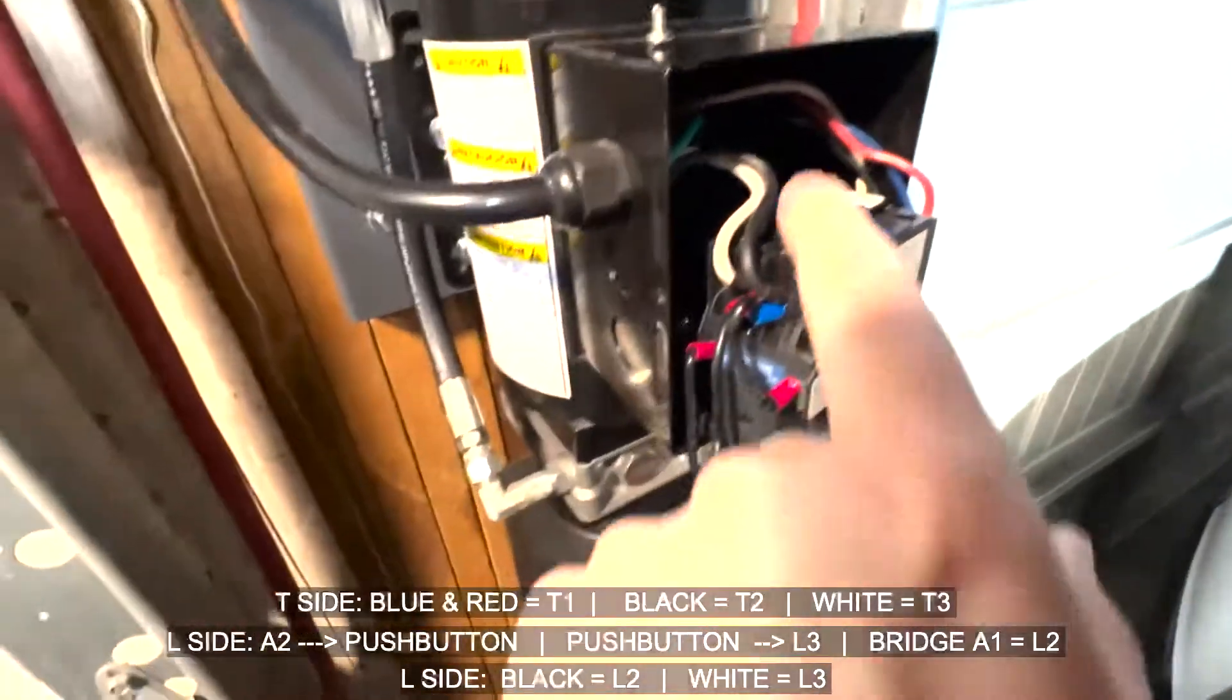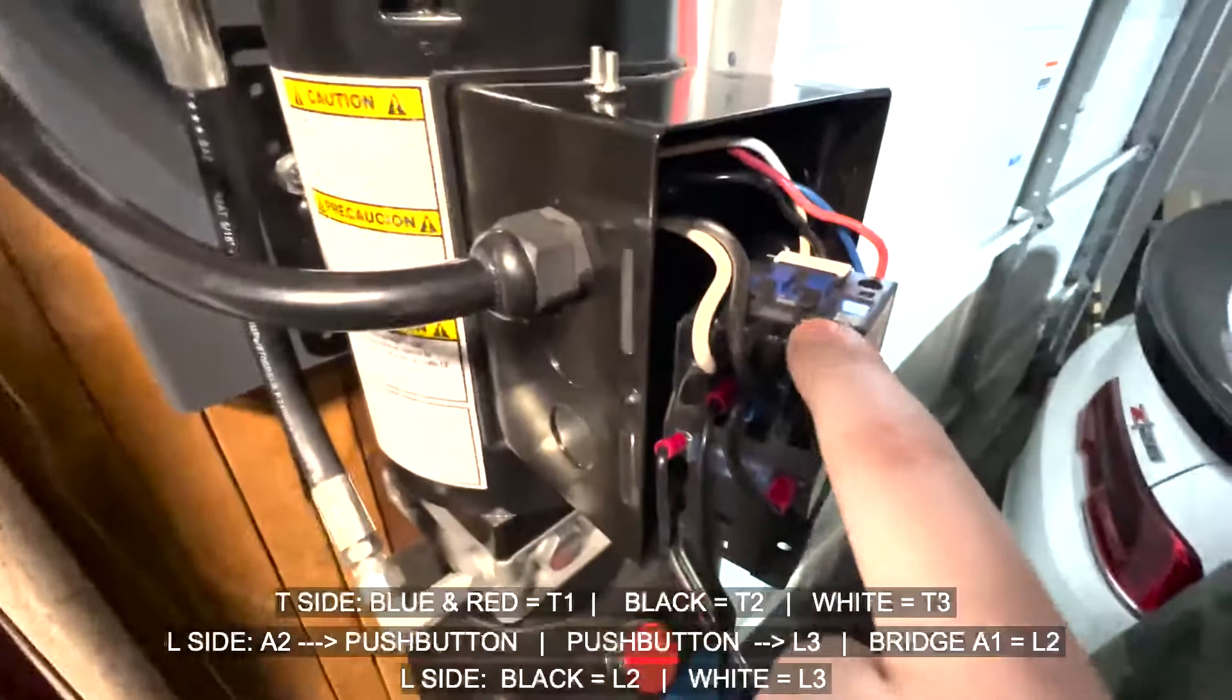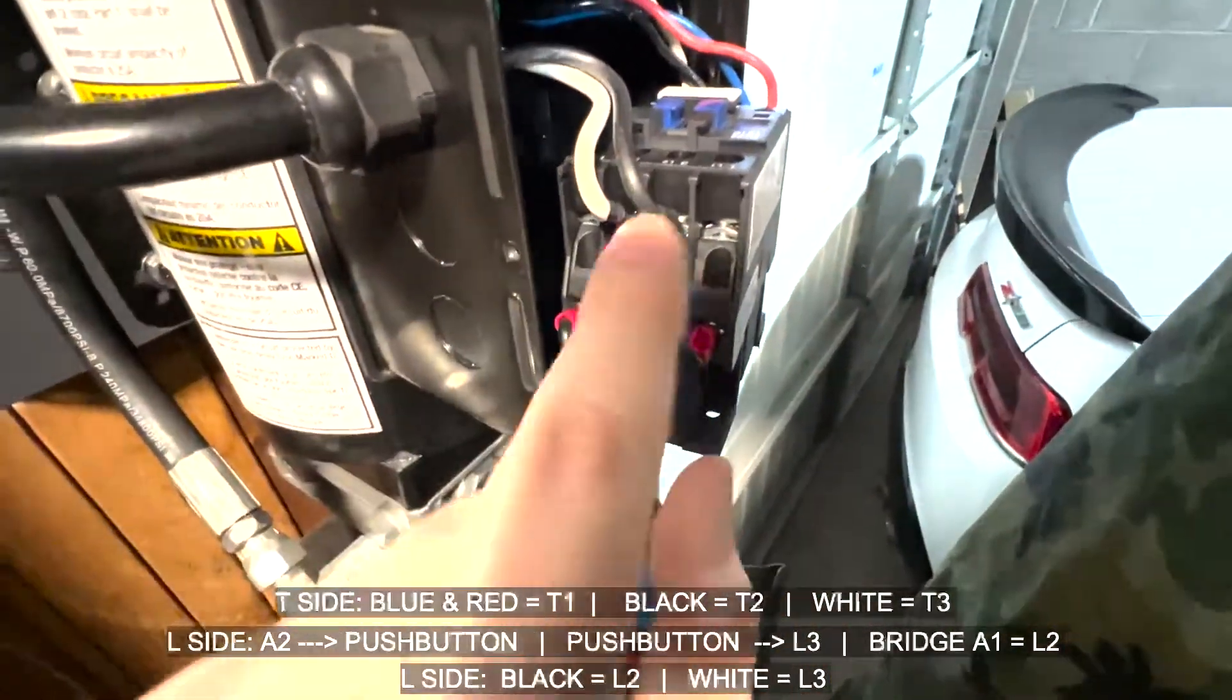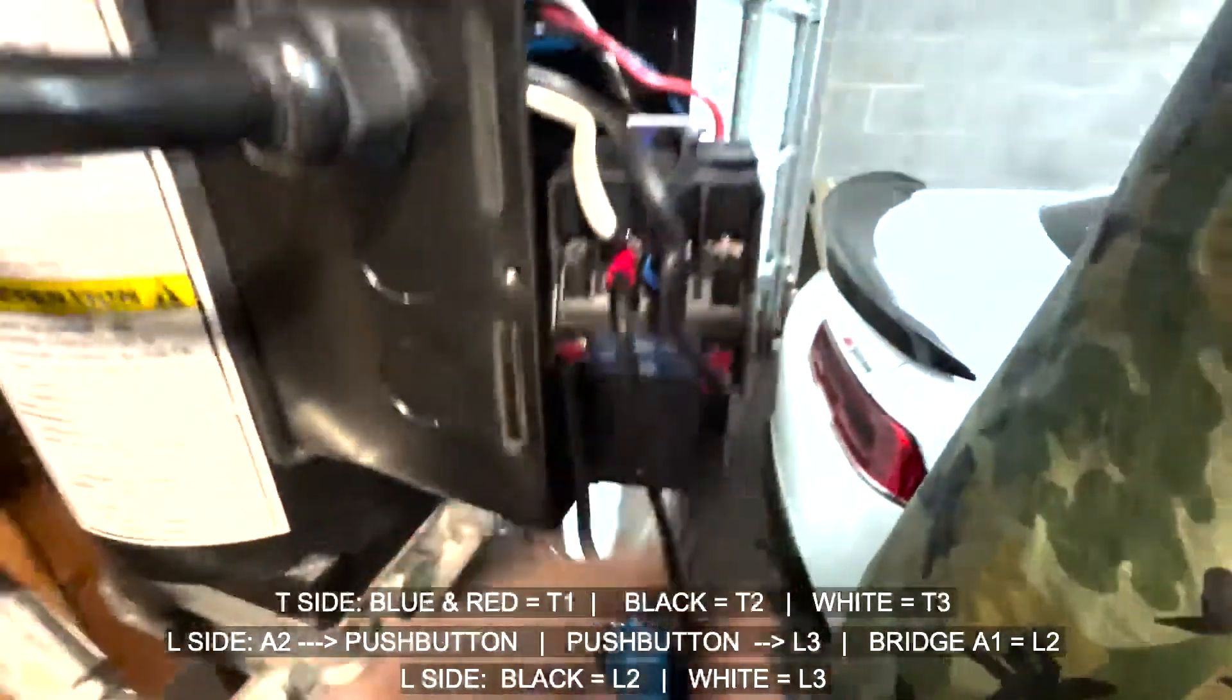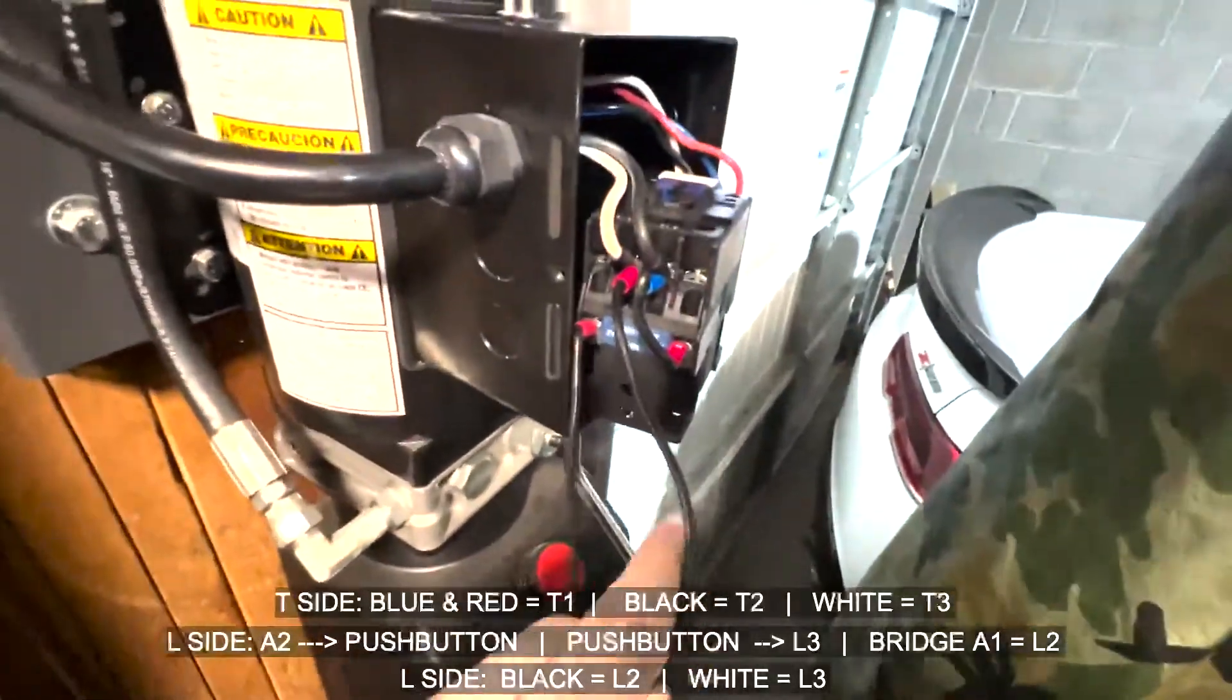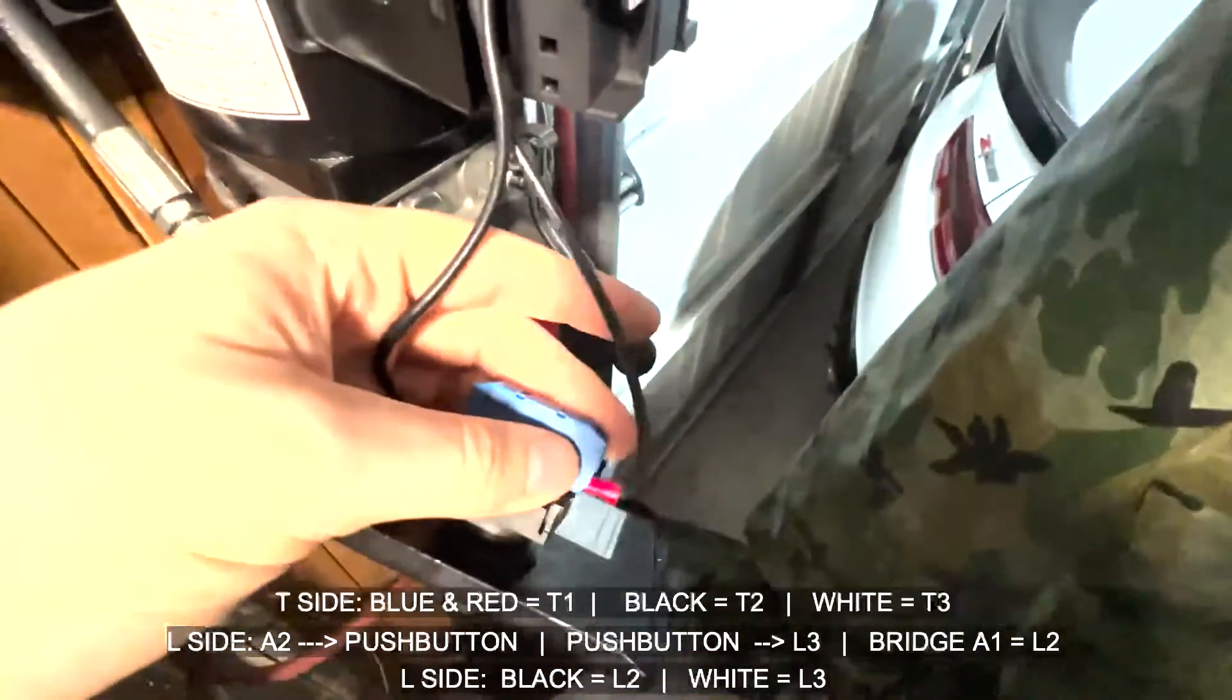It doesn't matter which hot you put. They're both the same. They're both just 220 or 110 power each. You're going to plug those in. Then you're going to have a bridge from your L2 come down to A1, pretty much just like that. And then you're going to have one from L3, which is right here, come into your push button on either side. I don't think it matters. Now don't hold me to that, but I'm pretty sure it does not matter. And then have the other side of your push button come out from here to A2.